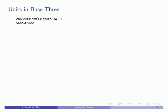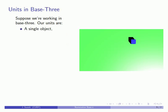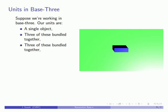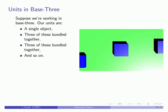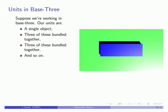And in base n each unit is going to be produced by bundling n smaller units together. So for example suppose we're working in base 3. Our units are going to be a single object, three of these objects bundled together to form a larger unit. We can then take three of these larger units and bundle them together to form a still larger unit. We can even take three of these units and bundle them together to form a still larger unit, and so on.